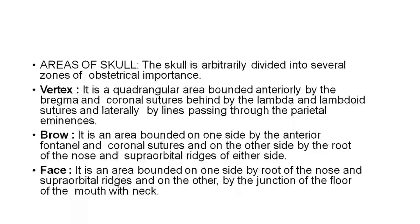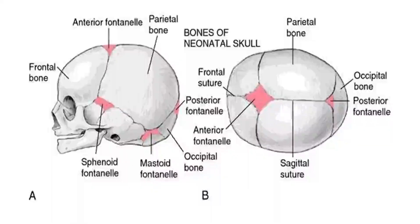Brow is the area bounded on one side by the anterior fontanelle and coronal sutures, and on either side by the root of the nose and the supraorbital ridges. Face is the area bounded on one side by the root of the nose and supraorbital ridges, and on the other by the junction of the floor of the mouth with the neck.